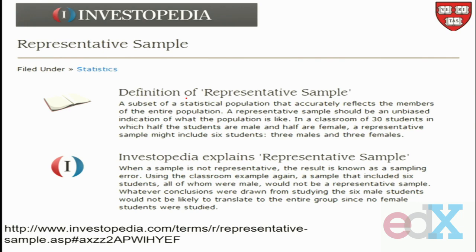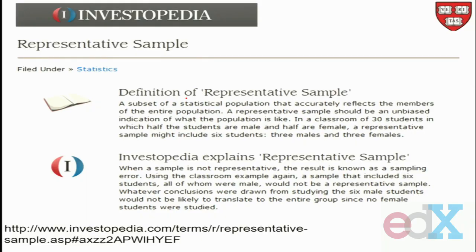They go on to say, when a sample is not representative, the result is known as a sampling error. I don't believe everything you read. Using the classroom example again, a sample that includes six students, all of whom were male, would not be a representative sample. Whatever conclusions were drawn from studying the six male students would not be likely to translate to the entire group, since no female students were studied.